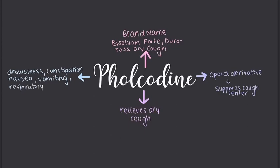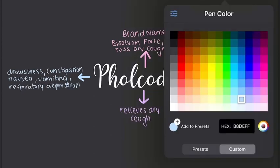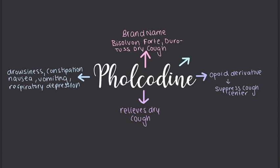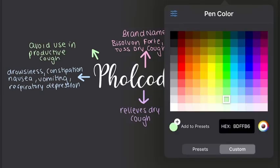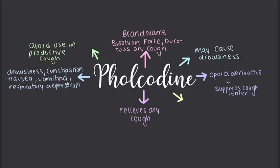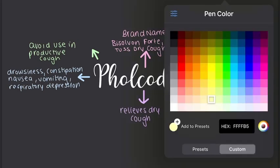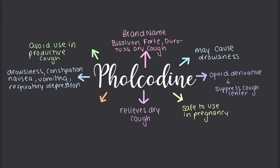Respiratory depression is when the lungs fail to exchange carbon dioxide and oxygen efficiently, and this dysfunction leads to a buildup of carbon dioxide in the body, which can lead to other health complications. This medication can make you drowsy, and with alcohol, it can actually increase that feeling of drowsiness. It's also suggested to avoid use with a productive cough — a mucusy cough — because suppressing the cough prevents the clearance of mucus.